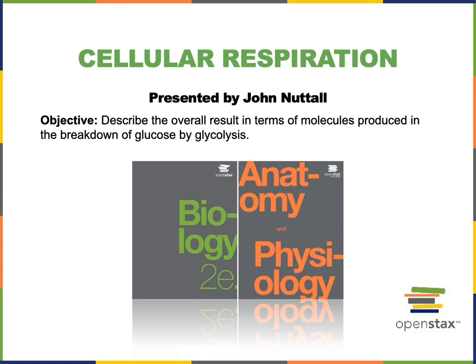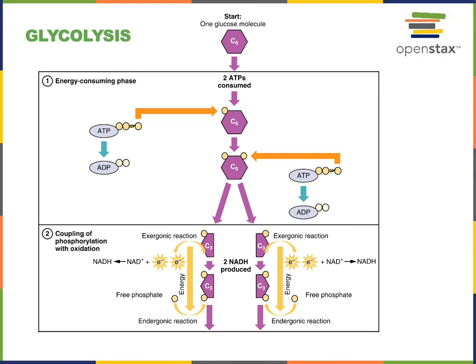In this video, I will describe the overall result in terms of molecules produced in the breakdown of glucose by glycolysis. Glycolysis is a catabolic pathway that converts one six-carbon glucose molecule into two three-carbon pyruvate molecules, and will generate two molecules of ATP and two molecules of NADH, which the cell can use in order to sustain life.